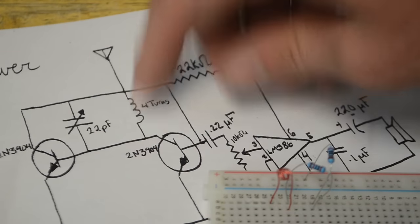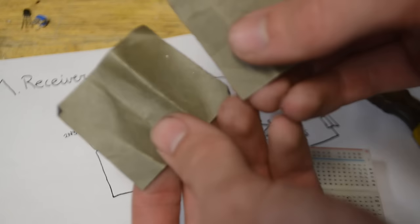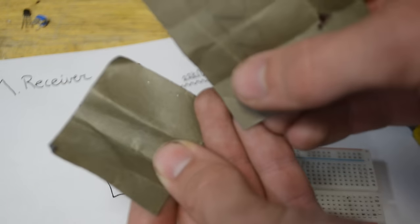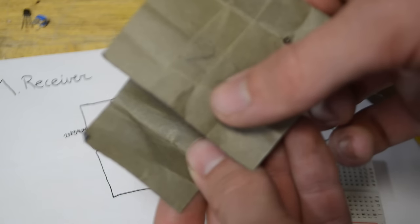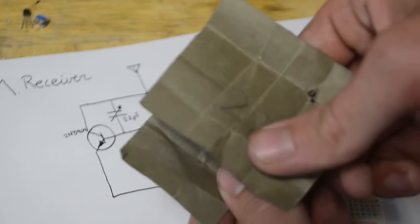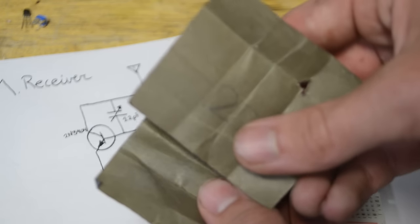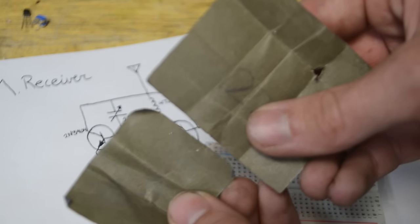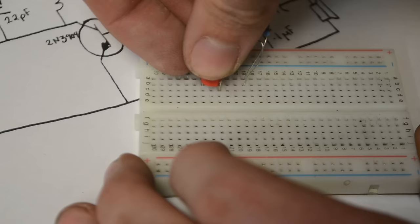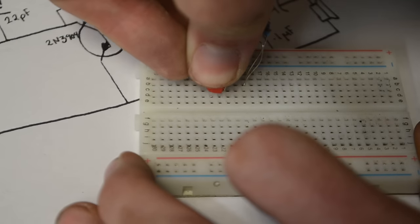The next thing we need is a 22 picofarad variable capacitor. These can come in a variety of looks, but on the cheaper end, mine looks like this. As you can see on the inside, there's a place to turn it. What's happening is that when we turn it, two pieces of metal are becoming more and more parallel to each other, and this increases the capacitance. When we turn it the other way, the surface area of the metal becomes less parallel, thus decreasing the capacitance. We just need to insert that parallel to the coil.